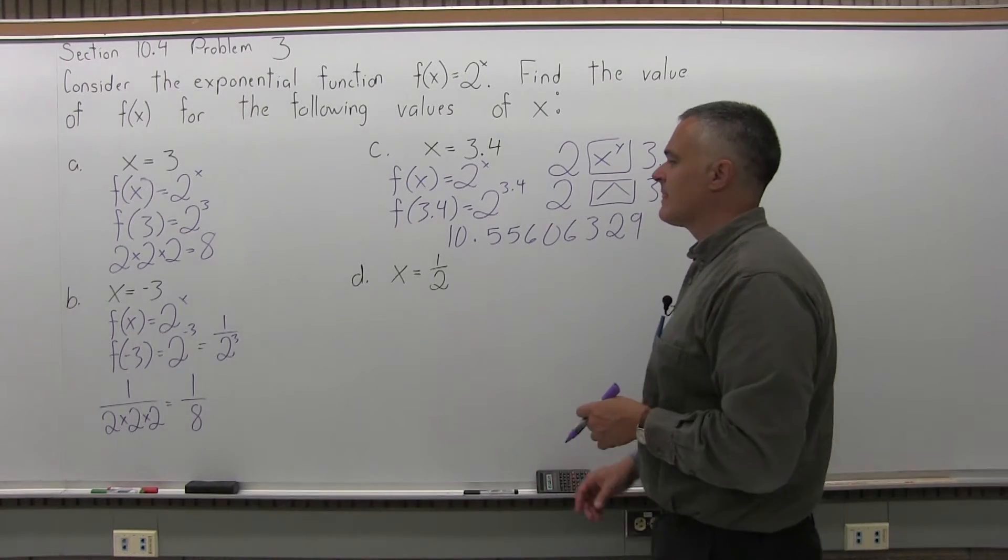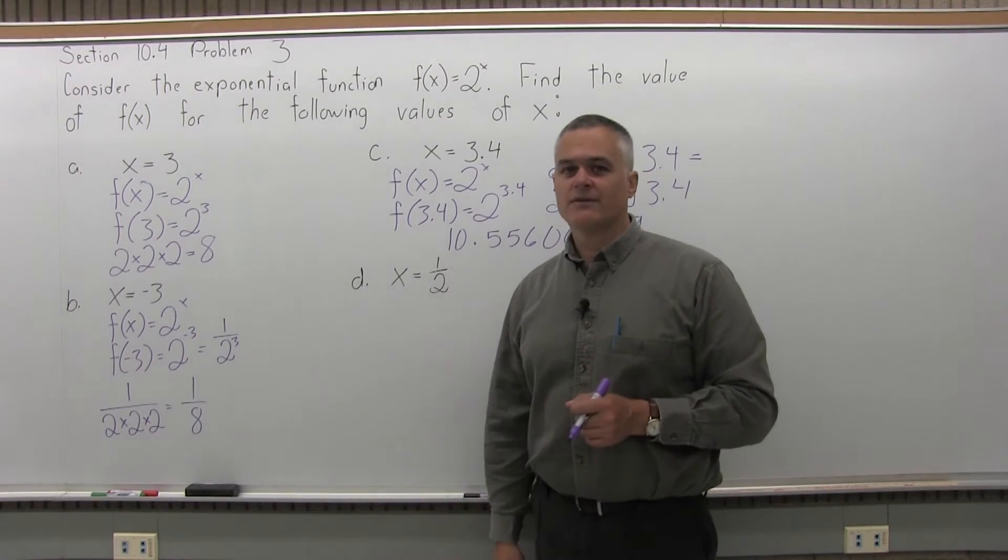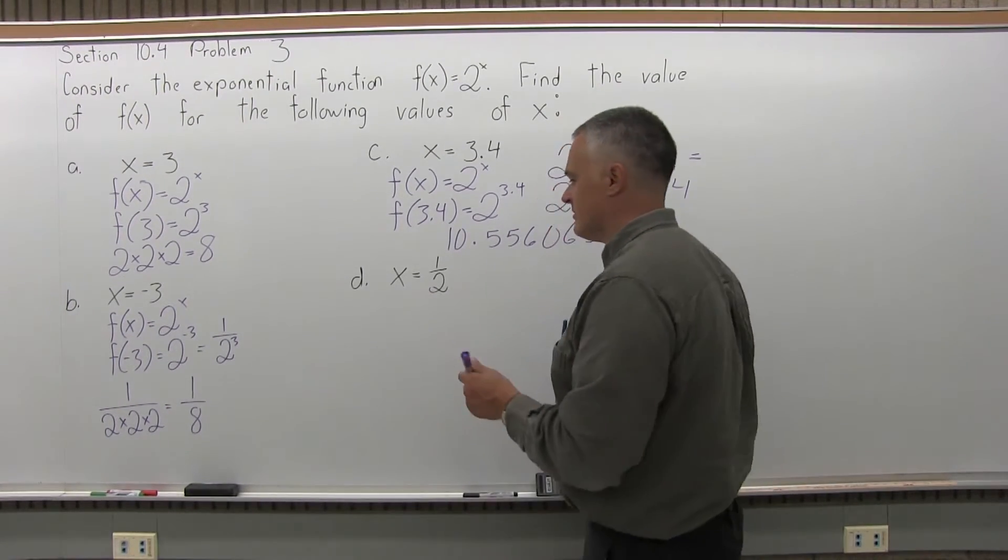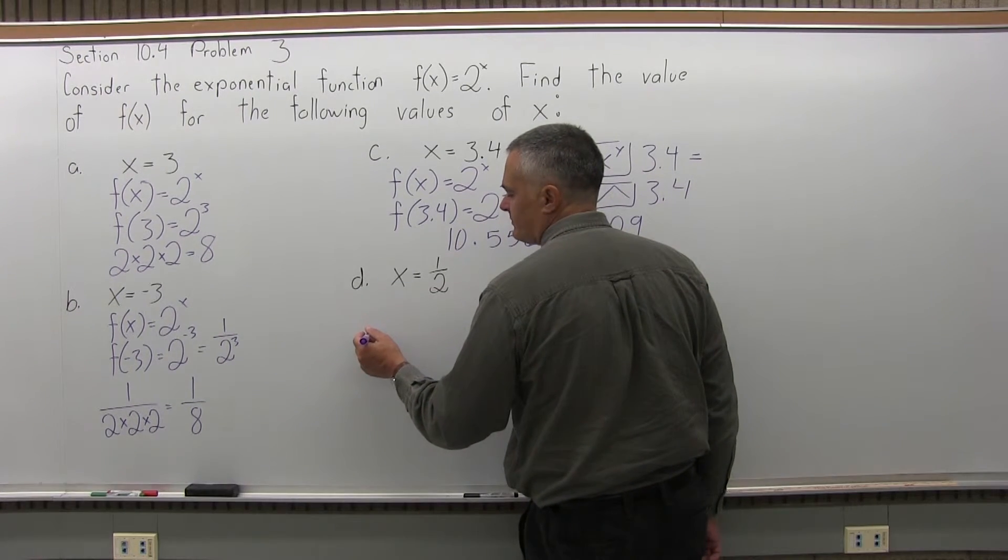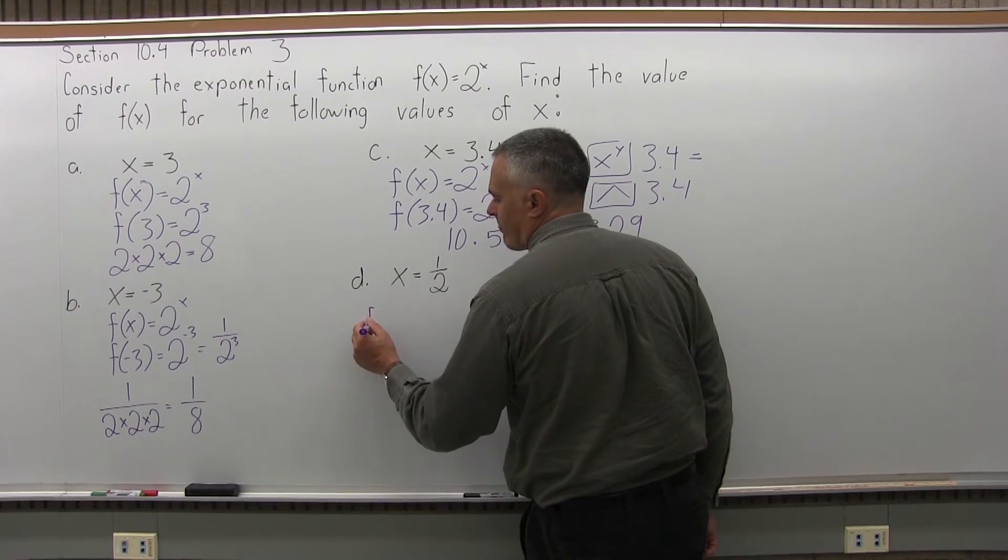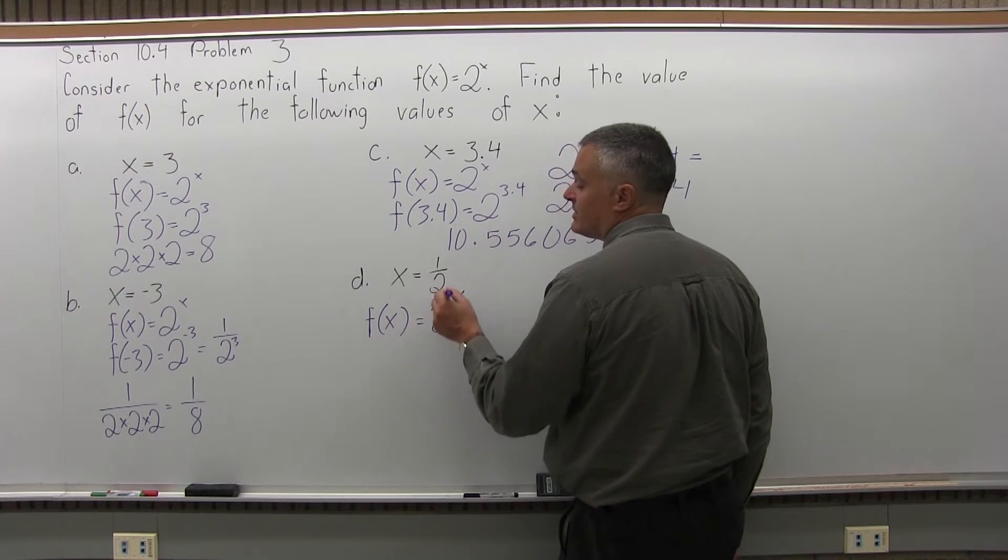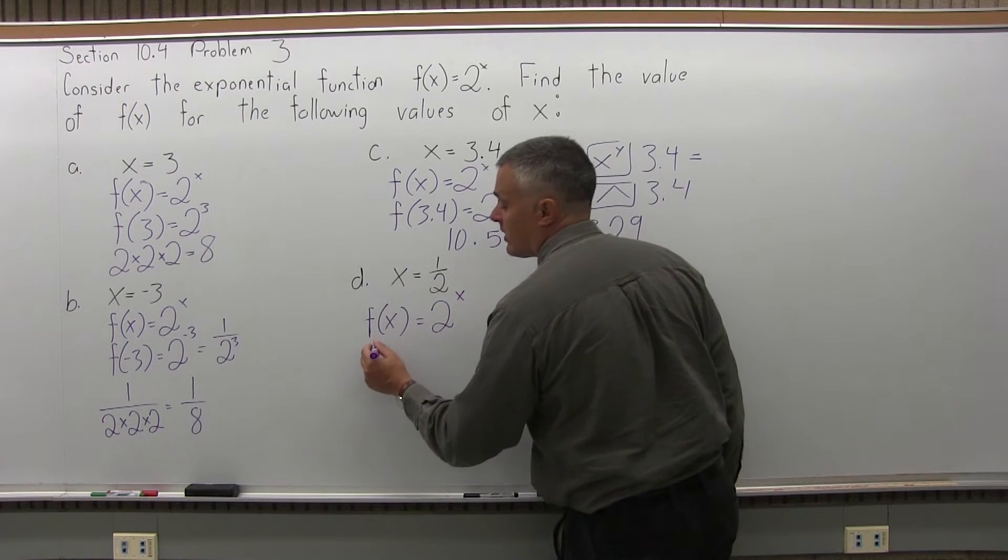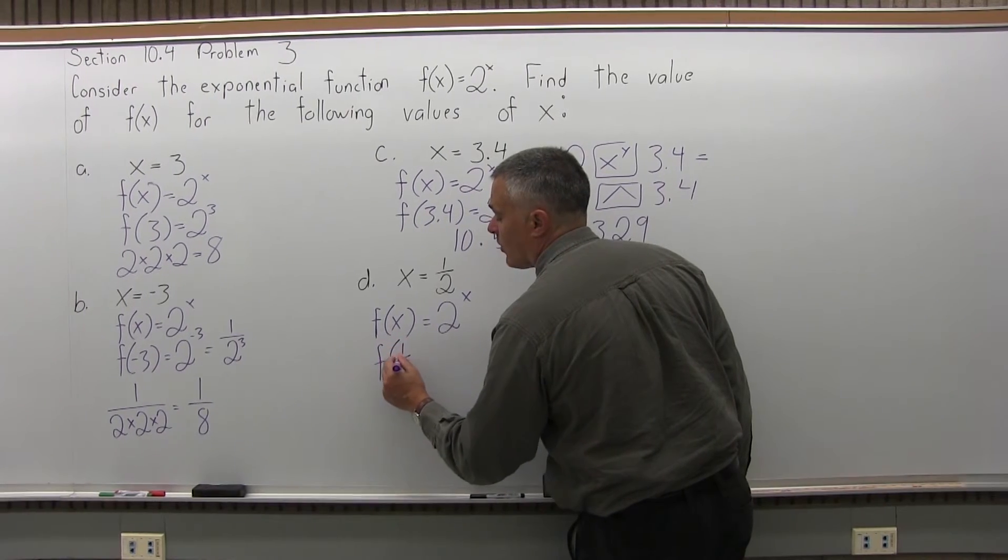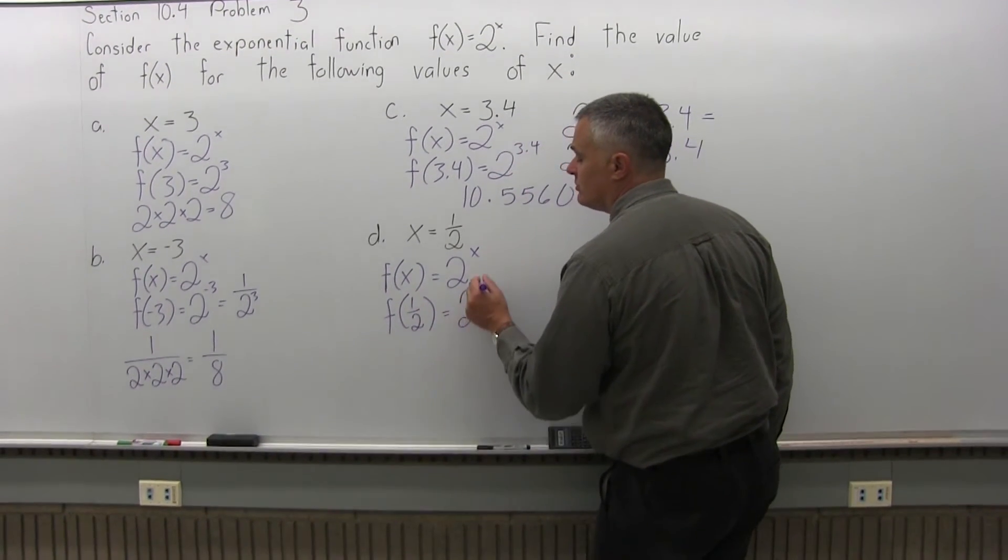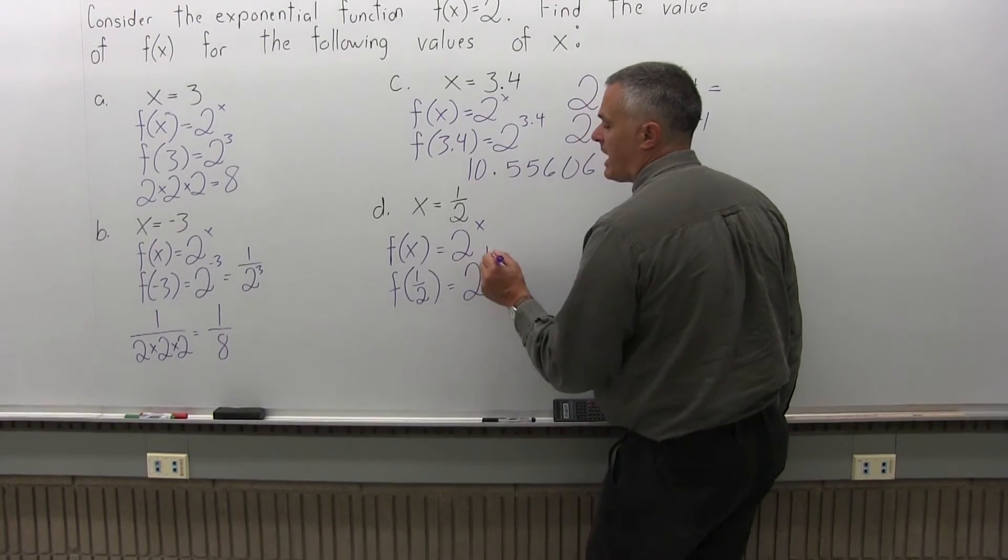And finally, x is one half, so that's kind of an odd thing too. So, f of x equals 2 to the x, they say use a value of one half for x. So f of one half equals 2 to the one half power.